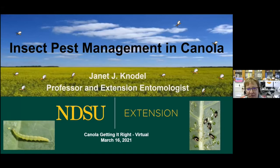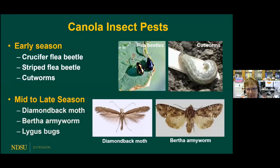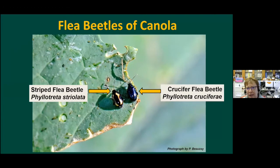Thank you very much and good morning. I'll give you a brief rundown on insect pest management in canola. I'll talk about some of the early season pests — flea beetles and cutworms — and then some of the later season pests: diamondback moth, bertha armyworm, and lygus bug. Let's get started with our number one pest, flea beetles.